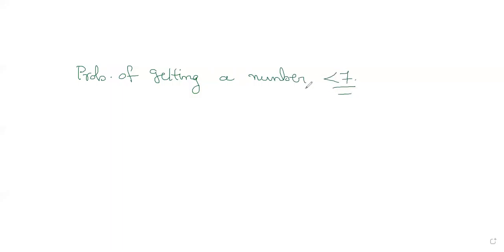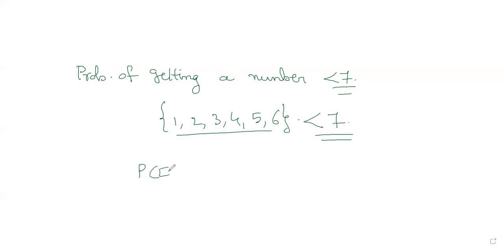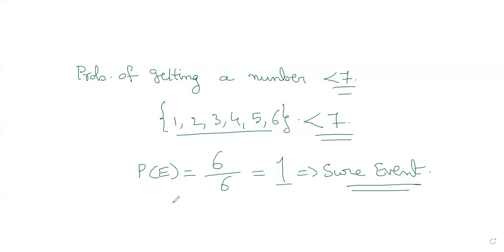If I ask for the probability of getting a number less than 7 on a die: all six numbers (1, 2, 3, 4, 5, 6) are less than seven, so all six possibilities qualify — that's 6/6 = 1. If the probability is 1, that is called a sure event. An impossible event has probability 0; a sure event has probability 1.